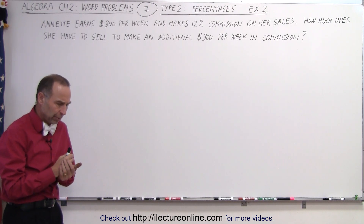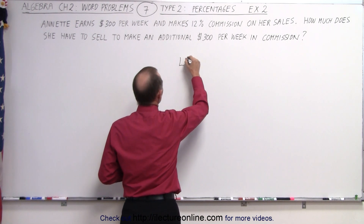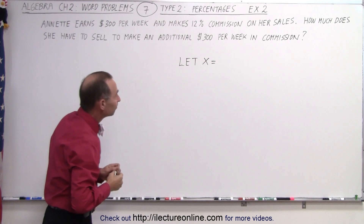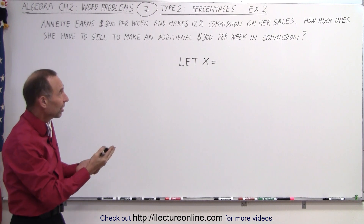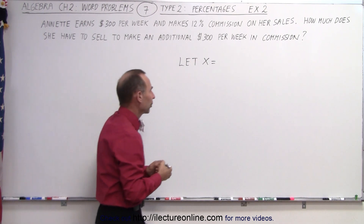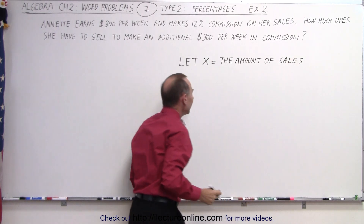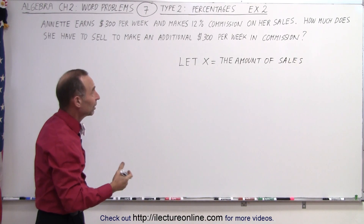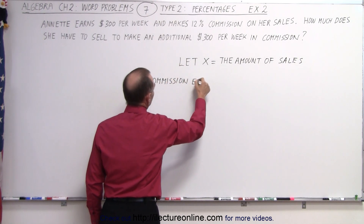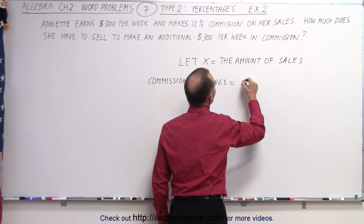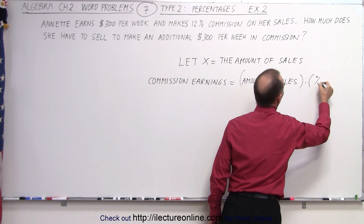We start solving the problem by saying let X equal something. In this case, we should let X equal the amount of sales in commission, because we need to take 12% of that and equate that to how much money she's going to earn from her commission. So let X equal the amount of sales, and then we can express how much she makes in commission in terms of X. The commission earnings equals the amount of sales multiplied times the percent in commission.